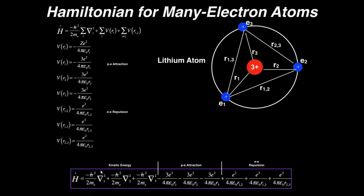This is for three electrons — a lithium atom. You can imagine as you get to larger atoms like beryllium, boron, carbon, and so on, this is going to become a very, very long Hamiltonian, which is why you probably can't solve this analytically using the Schrödinger equation.